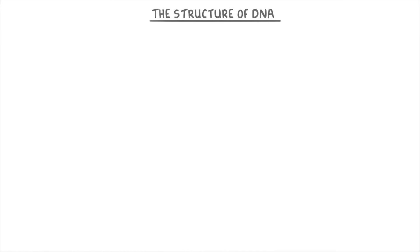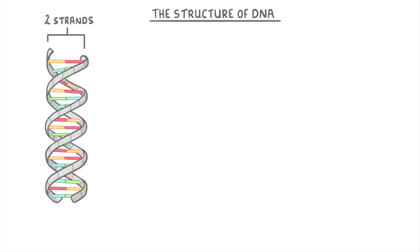The first thing to understand about DNA is that it's made from two strands that are wrapped around each other in this twisting shape that we call a double helix.